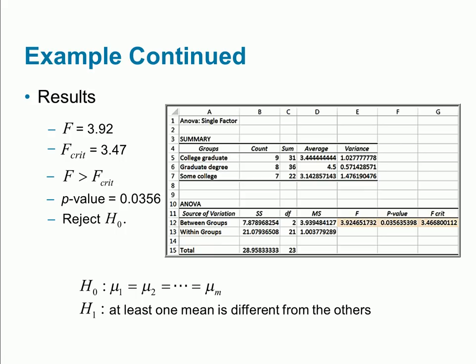Between groups degrees of freedom is two because I have three groups and n minus one is the degrees of freedom. Within groups, I have a total of 24 observations, and 24 minus 3 is 21. This is mean square errors. Finally, I have an F value, a p-value, and an F critical value.